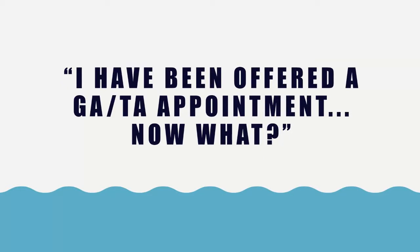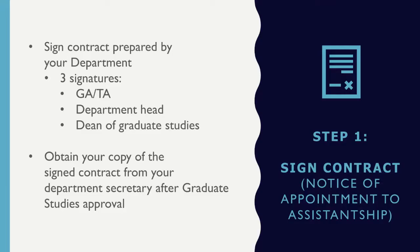Now that we've covered those foundational components, let's talk about what you should do in the next couple of days, weeks, and months. You came to this workshop to answer the question: I've been offered my GA or TA appointment — now what? We talked a little about the contract you need to sign. This contract is required to be signed in order for you to work, and you must also be registered.